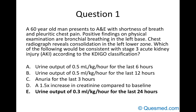The answer to the first question is E: urine output of 0.3 ml per kg per hour over the last 24 hours. Reading the question, we have a 6-year-old man who comes in with shortness of breath and pleuritic chest pain. There seems to be evidence of a pneumonia — bronchial breathing and consolidation in the left lower zone. Acute kidney injury is often associated with critical illnesses and infections such as pneumonia. This question asks you to recall the stages of acute kidney injury.